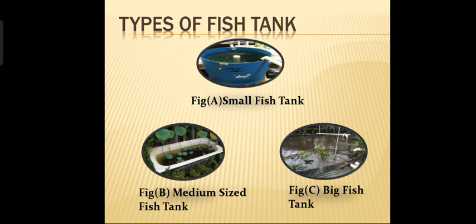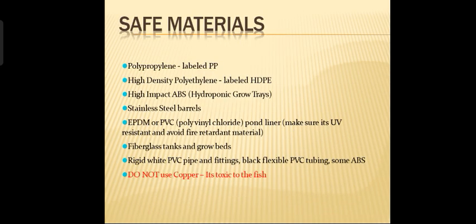The types of fish tanks used are small, medium, and large fish tanks. The safe materials include polypropylene, high density polyethylene, high impact ABS, stainless steel barrels, EPDM or PVC, fiberglass tanks and grow beds, rigid white PVC pipe and fittings, and black flexible PVC tubing. We do not use copper because it is toxic to the fish.